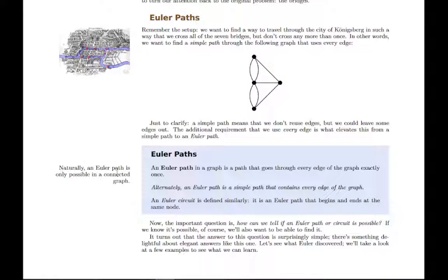Obviously, it's only possible in a connected graph because otherwise you wouldn't be able to touch all the points or cross through all the edges without jumping across some empty space. And then you can have an Euler circuit as well. It's just an Euler path that starts and ends at the same place.